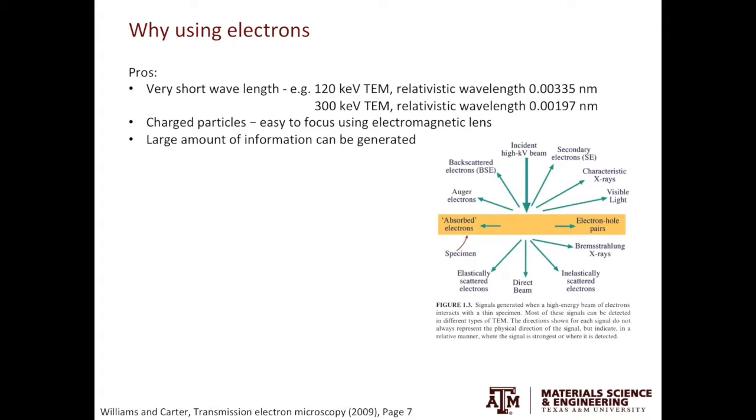There are many advantages of using electrons to form images. First of all, electrons have very short wavelengths. In a 120 kV TEM, the relativistic wavelength of the electron beam is 0.00335 nanometers. At a higher acceleration voltage, at 300 kV, the relativistic wavelength is further reduced to 0.00197 nanometers. Just to give you a reference, the typical wavelength for visible light is around 400 nanometers. So the wavelength of the electron beam is orders of magnitude smaller than the wavelength of visible light.